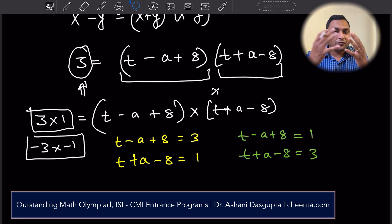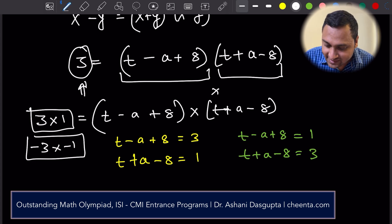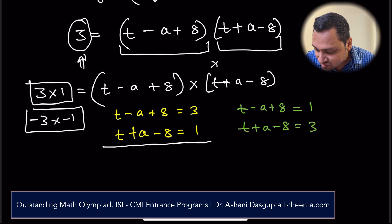Those are the four sets of equations. If you have four sets of equations, you can now solve for t and a. For example, if I just add this up, I'll get 2t equals to 4 or t equals to 2.